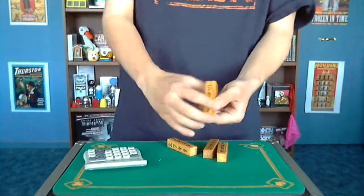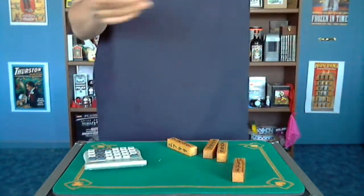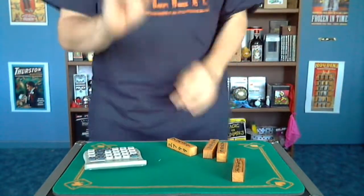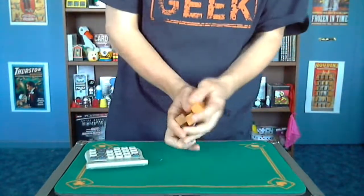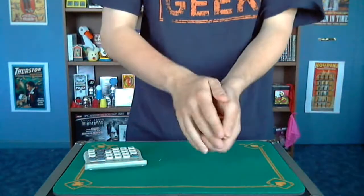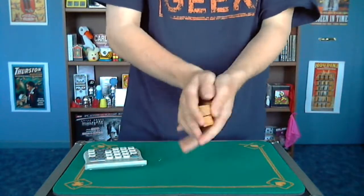Okay, now one die is pretty easy. You might be saying to yourself, can you do it with two? Yes, I can. So if I shake these dice up, and normally the spectator would be shaking the dice up and choosing which ones they want to use.